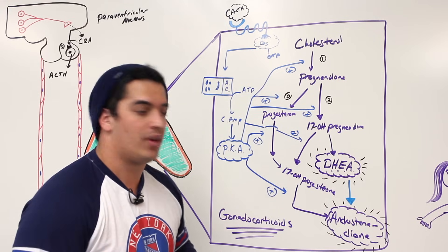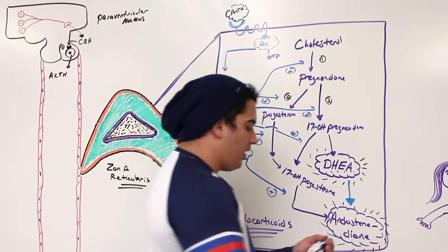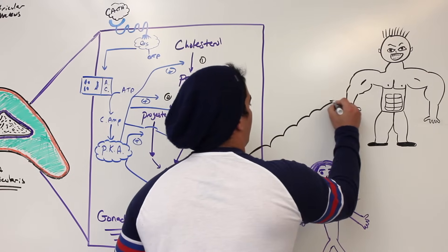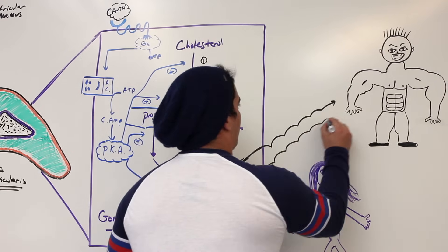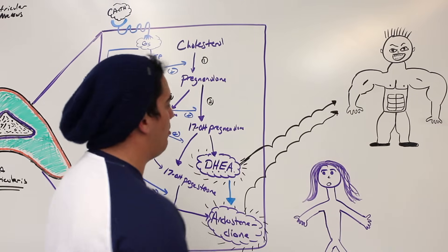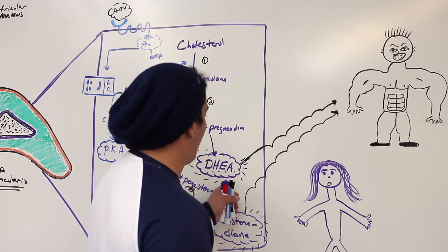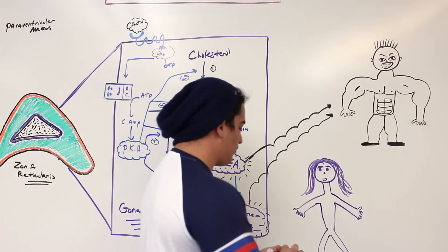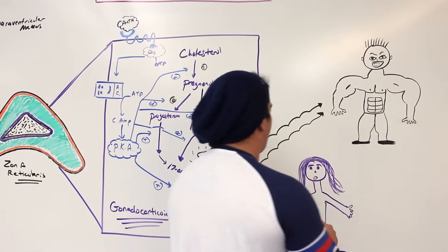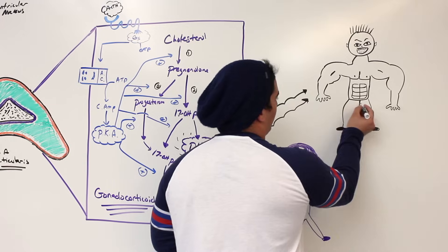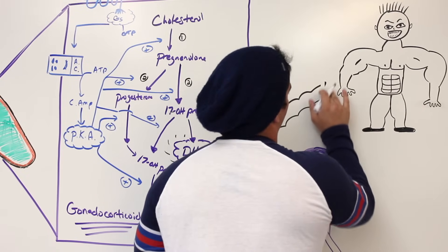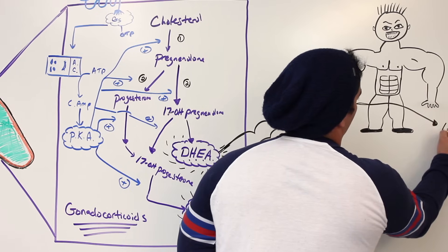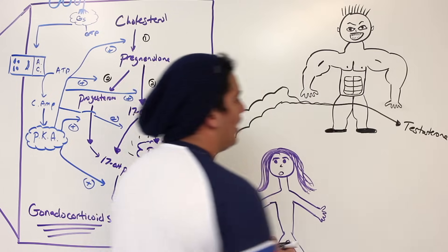What do these gonadocorticoids — these weak sex hormones — go on to do? They come and act on both the male and the female. For the male, DHEA and androstenedione go to the testes, and eventually all of it gets converted into androstenedione. That androstenedione in the male, specifically in the testes, gets converted into testosterone.